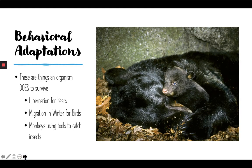The next type of adaptation is behavioral adaptations — things an organism does in order to survive. One really well-known example is how bears and some other mammals hibernate in the winter. There's not a lot of food available in the winter for a bear, which is a scavenger that eats berries, roots, and small animals. Since there's not food available, the bear stores up food and then goes to sleep all winter. The bear stays warm and survives without having to hunt through the winter.